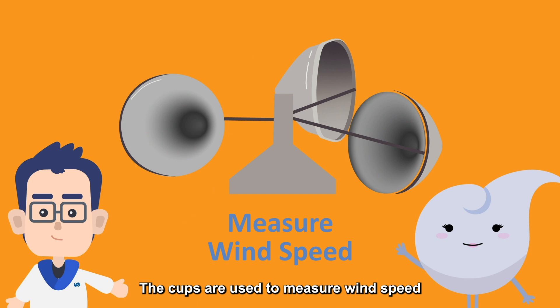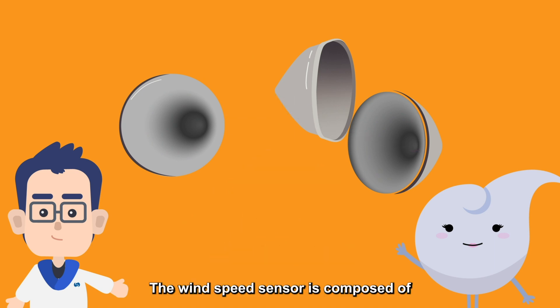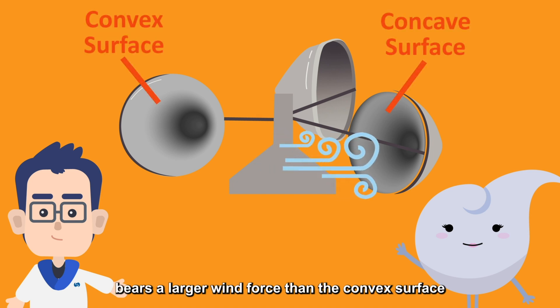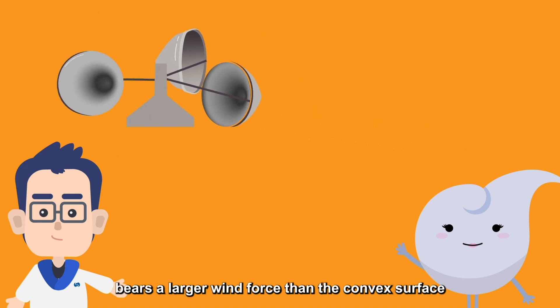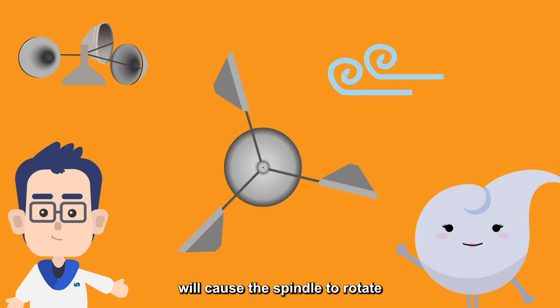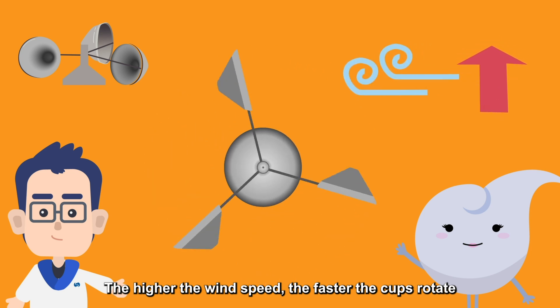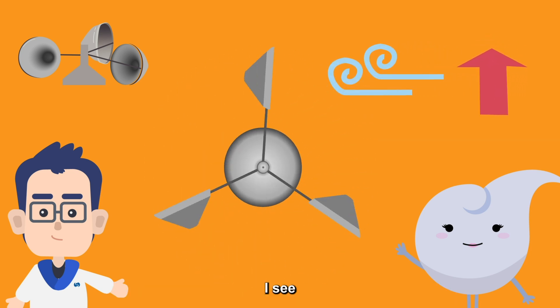The cups are used to measure wind speed. The wind speed sensor is composed of three symmetrical cups, which are fixed on a vertical spindle. Since the concave surface of the cup bears a larger wind force than the convex surface, the wind blowing into the cups will cause the spindle to rotate. The higher the wind speed, the faster the cups rotate.